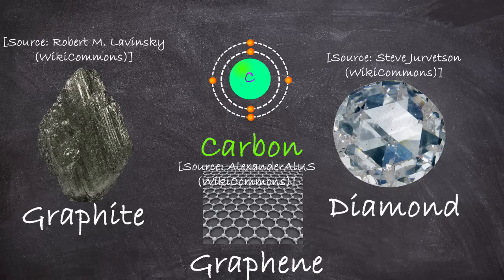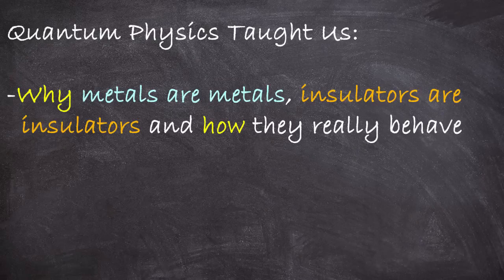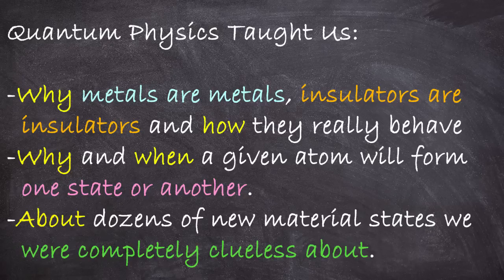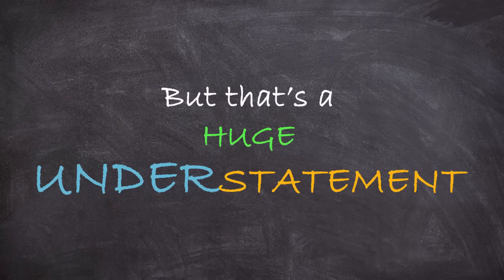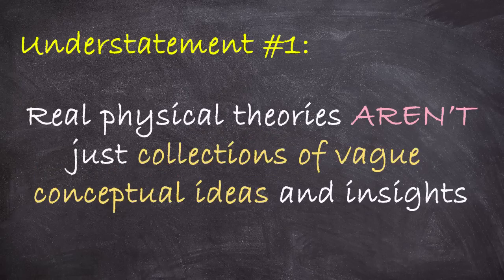Or even the new wonder state, graphene, which you may have heard of. With quantum physics, we understood all of this. We understood why the metallic or insulating states behaved the way they did. Why some atoms could form one or the other. What determined it? We could perfectly describe and model any intermediate states and even learned about literally dozens or even hundreds of new states we didn't even know could exist before. But really, this is underselling it. And it's underselling things in two big ways. The first thing to understand is that a physical theory like quantum mechanics is not just a bunch of vague qualitative insights.